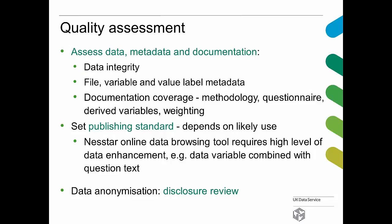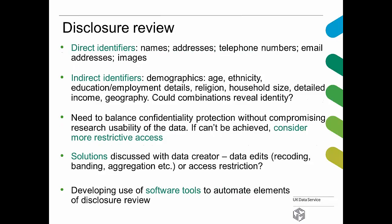We also undertake a data anonymization disclosure review where we will check the data for any likely confidentiality issues. The kinds of things we will look at — obviously depending on the contents of the individual data file — will be direct identifiers. Have they been left in the data? For example, does the data contain names, addresses, telephone numbers or anything else that can directly identify respondents such as email addresses or images? We will ensure that unless explicit consent has been given to share these images or other characteristics with other researchers, any direct identifiers have been removed from the data.